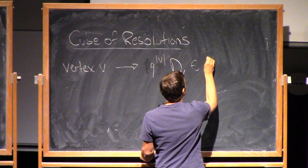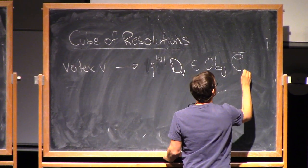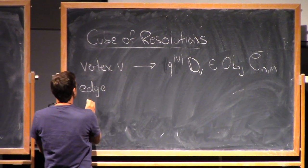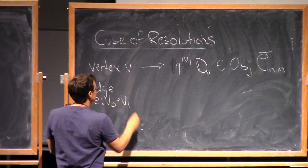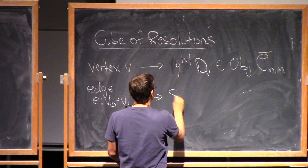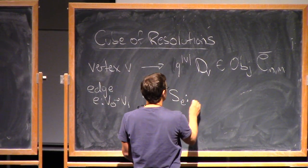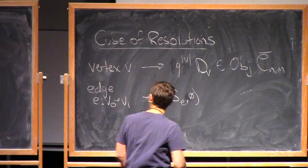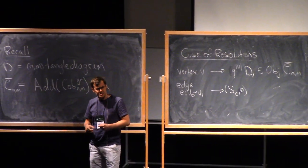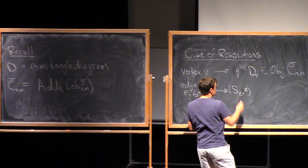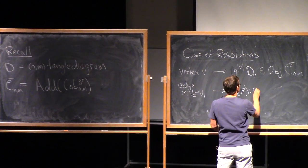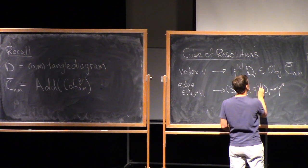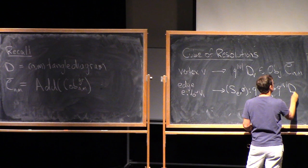This is a perfectly good object of our category C-bar(N,M). To an edge E from V0 to V1, I have a morphism, let's call it S_E. I'll say S_E of the empty set, because remember these morphisms came with a finite set of marked points — here there are no marked points at all — going from Q to the V0, d(V0) to Q to the V1, d(V1).